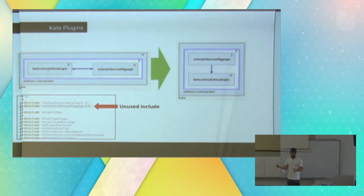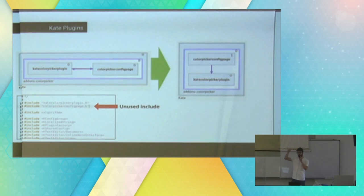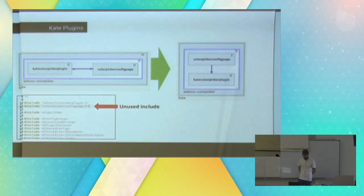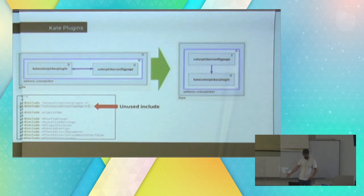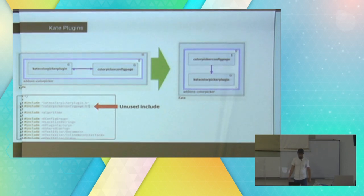Let's pick one and try to fix it. This is a very simple color picker plugin that had a cyclic dependency for some reason, but I found out it was basically an unused include. The tool goes through all the includes and says: you have a dependency between this component and the other because I found an include between them. But if the header is not used, I can remove it and I don't have a cycle anymore, because there was no real cycle going on anyway.